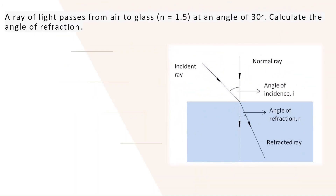The next question is: a ray of light passes from air to glass, where n is equal to 1.5. What is n? We have studied that n is also used to represent refractive index. I am writing refractive index as mu. The light is traveling from air to glass, hence this is the refractive index of glass, which is 1.5. When it is passing, its angle is 30 degrees — this is called the angle of incidence, written as i. Now we have to calculate the angle of refraction.